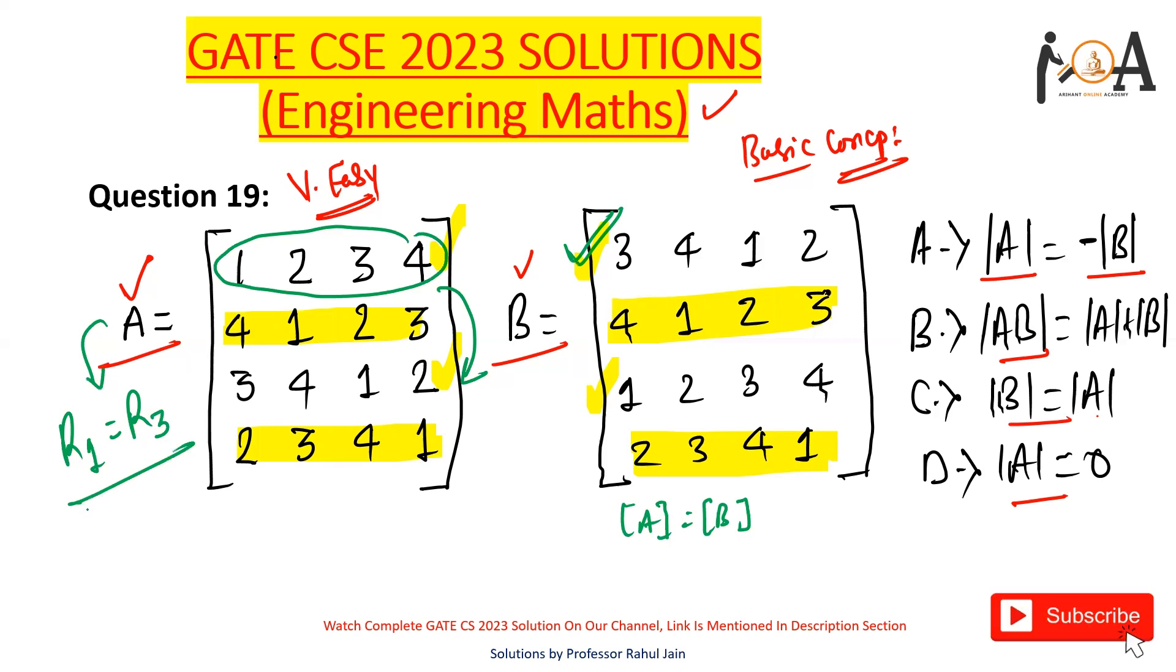But in that case, the sign will change. Now, they are asking about determinant. Obviously, if we have performed the interchanging here, definitely the determinant sign will get changed.